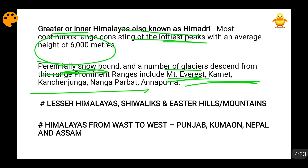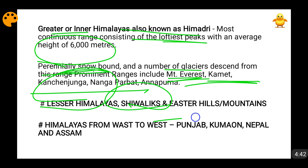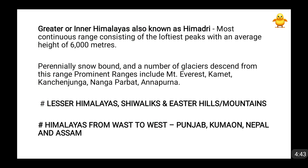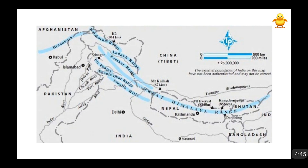Mount Everest comes in Nepal — just keep that in mind. Then the second thing is the lesser Himalayas, which comes below the great Himalayan range. Below the lesser Himalayas comes the Shivalik. Then there are the eastern hills and mountains. The Shivalik is at the bottom, above which is Pir Panjal and Dhauladhar.